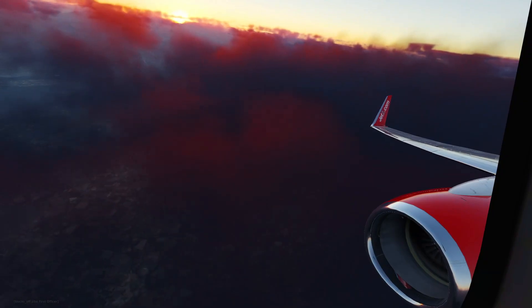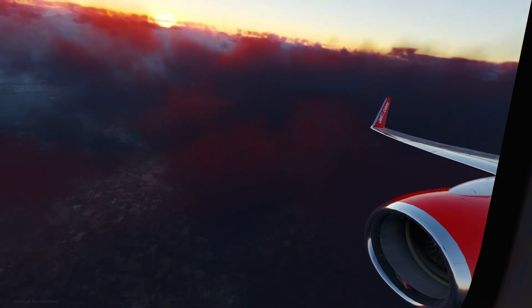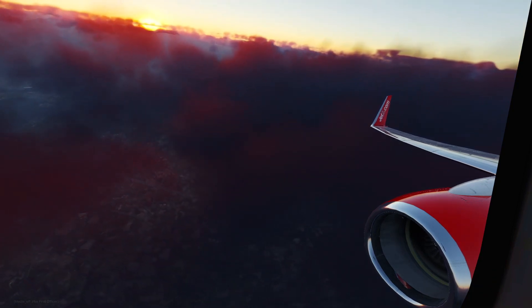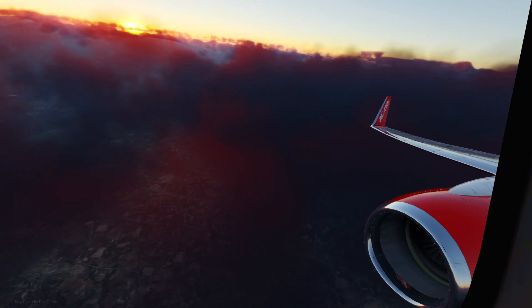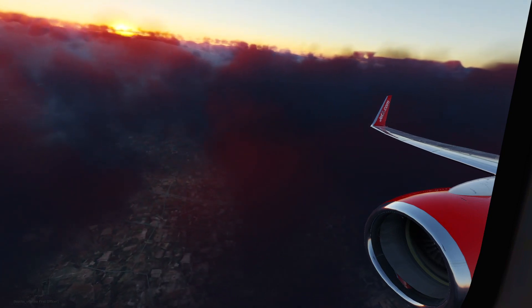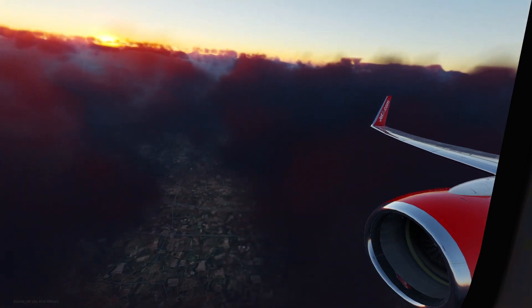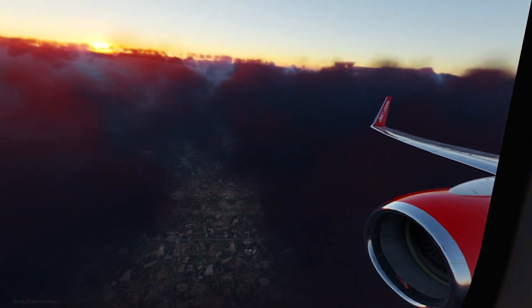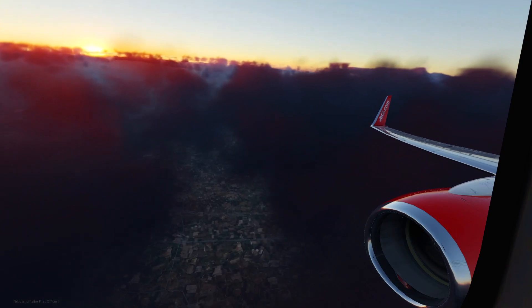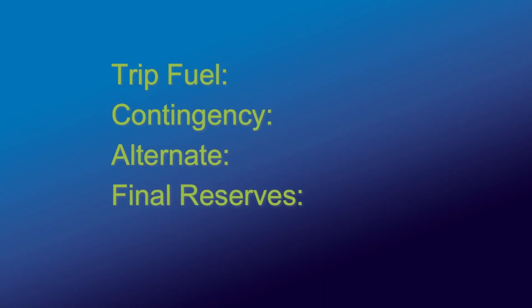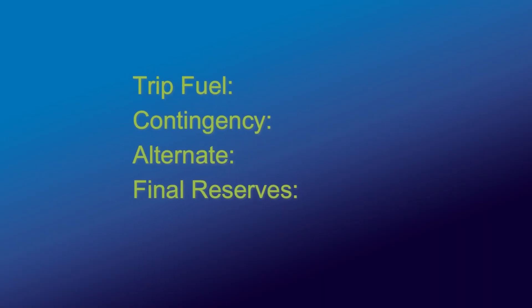Most of us are probably using flight planning software such as Simbrief, which of course factors in the wind and works out the fuel figures. But I'm going to use the FMC within the Zibo 737 to arrive at my trip fuel, 5% contingency, an alternate and final reserve.